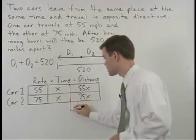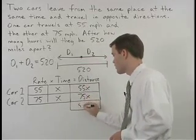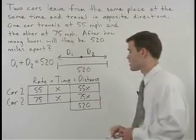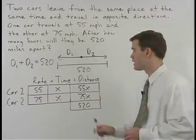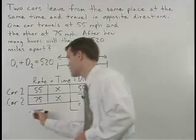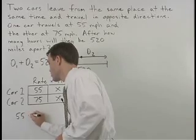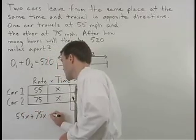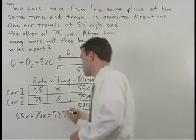So we can set up a little box down below and put 520 in it so that our equation will read 55x plus 75x equals 520. And solving from here we get x equals 4.